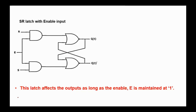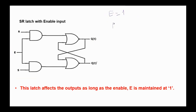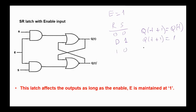Here is the SR latch with enable input. This latch affects the outputs as long as enable E is maintained at one. If enable is zero, we have the store state and no change occurs. If E equals one and S=R=0, Q(t+1) equals Q(t) — store state. On S=0, R=1, we have the set state with Q(t+1)=1. On S=1, R=0, reset state with Q(t+1)=0. And on S=R=1, the state is undefined.